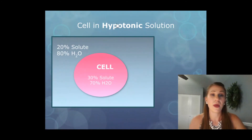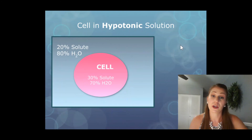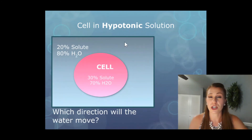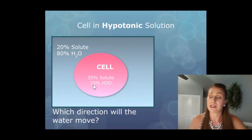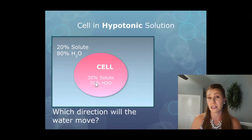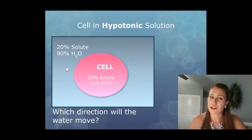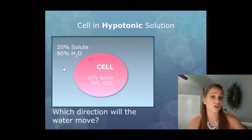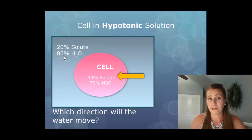Let's try another example: a cell in a hypotonic solution. We look at where the water is going to move. Outside the cell, we have a high concentration of water — 80% — compared to inside the cell where it's 70%. Even though there's not that much of a difference, inside the cell it's still a lower concentration. So we label the inside with an L and the outside with an H for high concentration. Because water moves from high to low concentration, it is going to move into the cell. You can almost draw an arrow from the 80 to the 70 to show the pathway the water moves.